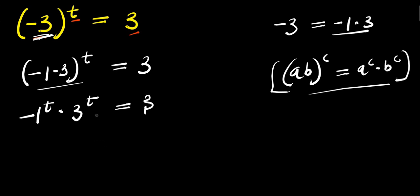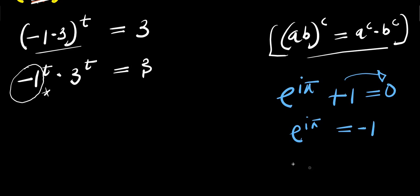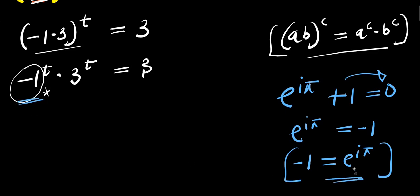What we are going to do is replace negative one using another identity, because we need to eliminate it. Consider Euler's identity: e to the power of i times pi plus one equals zero. Moving the positive one over, we have e to the power of i times pi equals negative one, meaning that negative one equals e to the power of i times pi. So we replace this negative one with e to the power of i times pi.